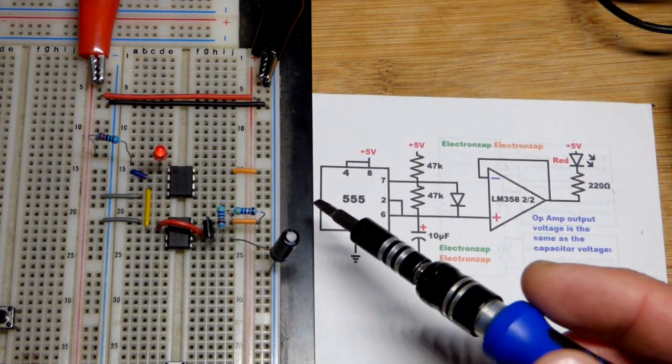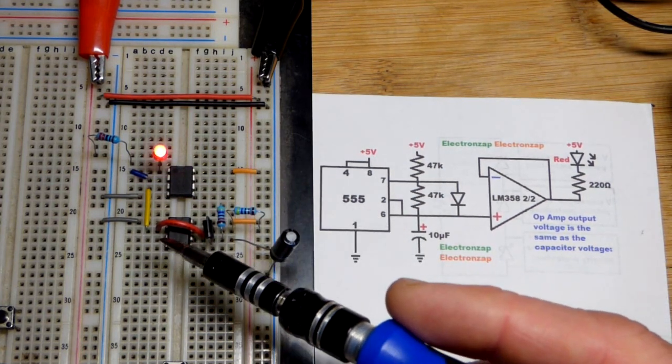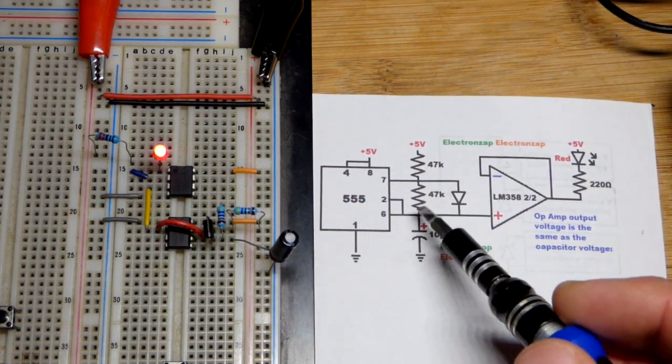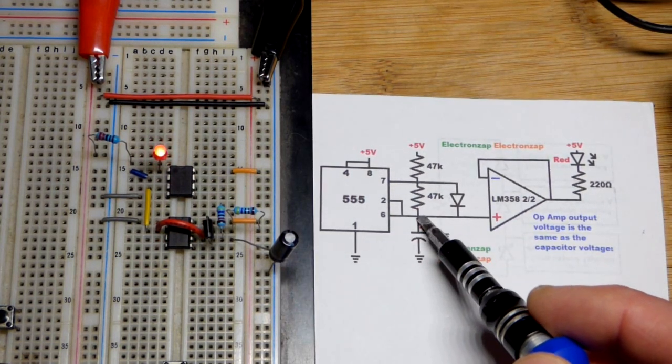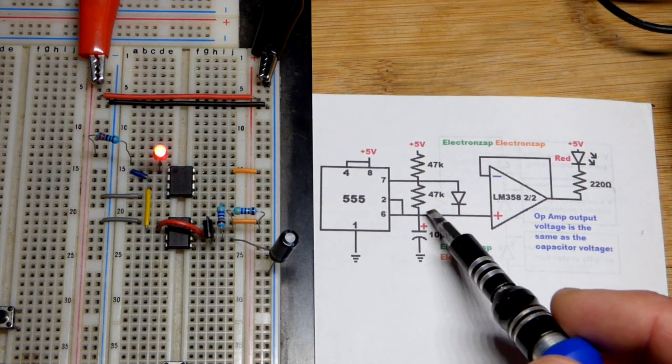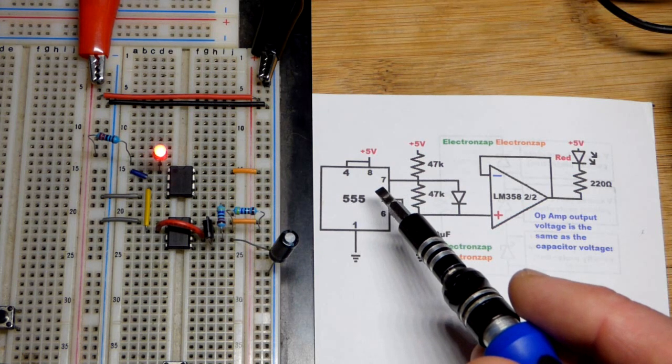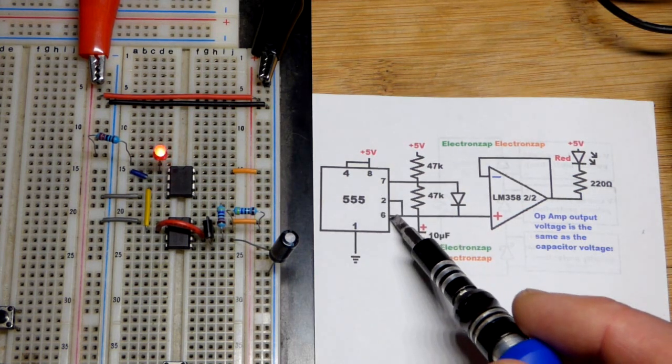We are not using the output of the 555 timer which is pin three that's usually used to power stuff. Instead we are just getting a signal from the 555 timer. We have it wired in astable mode with the diode there so that the capacitor charges and discharges over and over again.